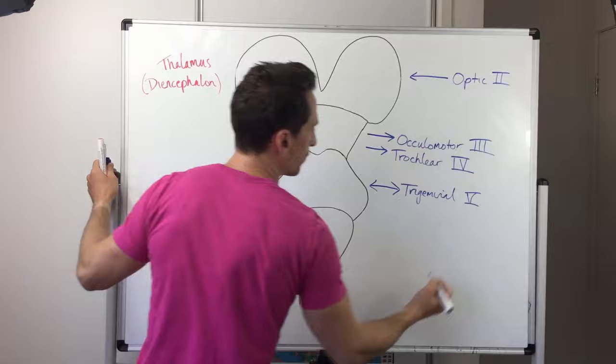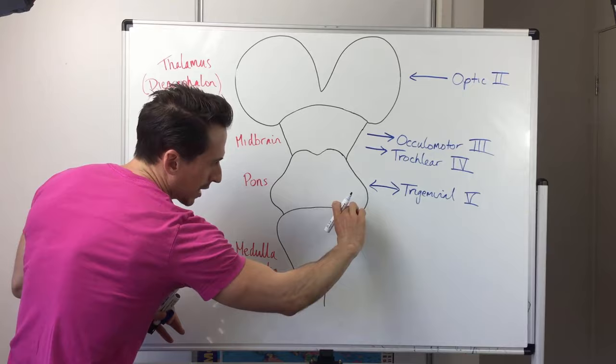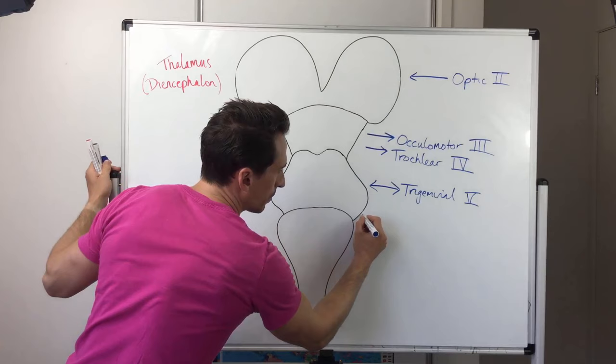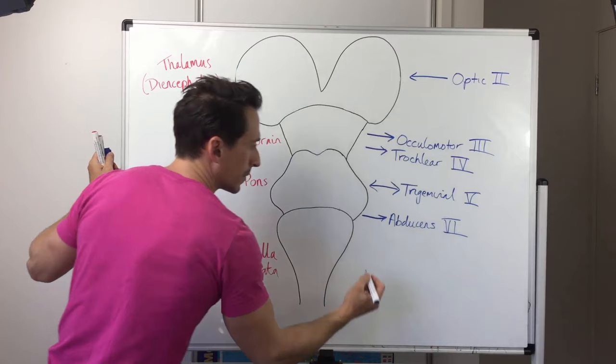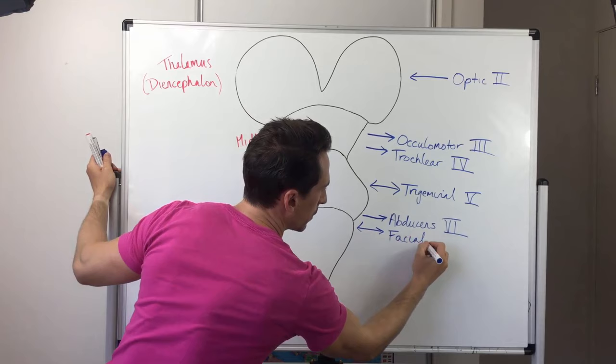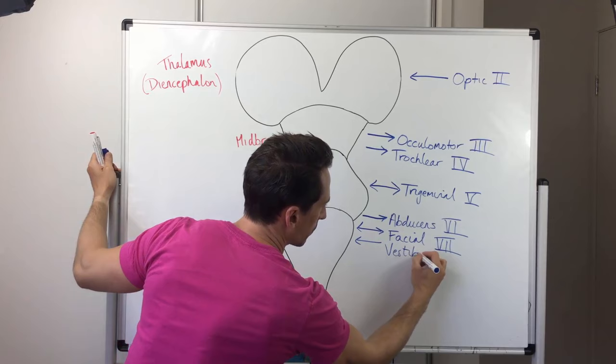At the bottom of the pons, the pontomedullary junction, and the start of the medulla, we have three cranial nerves. The abducens, which is motor, is cranial nerve six. The facial nerve, which is both sensory and motor, is cranial nerve seven. And the vestibulocochlear nerve, which is sensory, is cranial nerve eight.